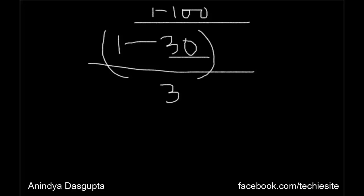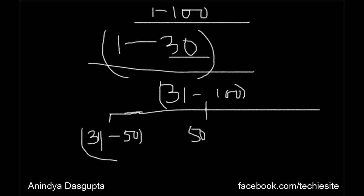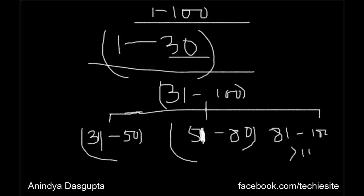With numbers ranging from 31 to 100, I will be dividing this group into three smaller groups. The first group will be from 31 to 50. The second group will have numbers between 51 to 80. And the third group will have numbers between 81 to 100 or even greater than 100.